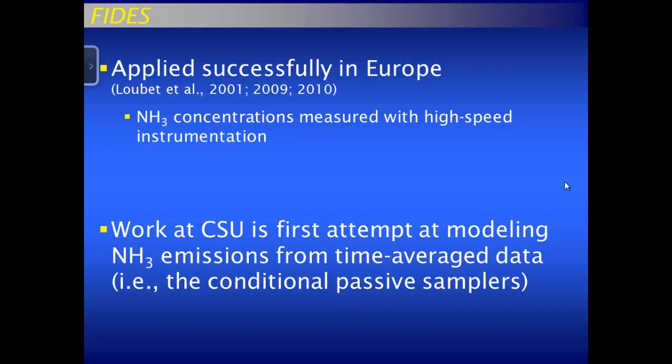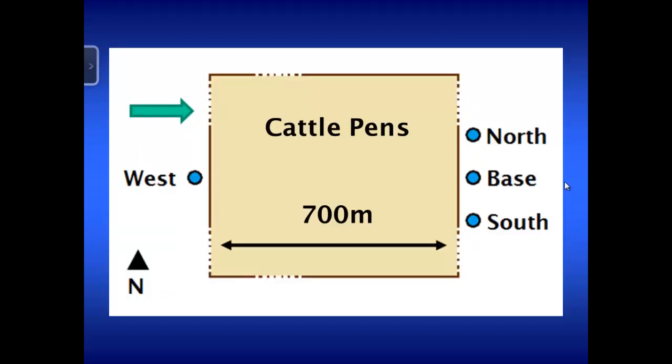FIDES has been applied very successfully in Europe for the past ten or so years, and it was created in France. The difference is that in Europe they were doing ammonia measurements that were a time series, whereas we have a two-week period represented by a single concentration for each location. This is really the first time that an inverse model has been used with time-averaged concentration data — we went into it wanting to see what was going to happen and whether we'd even get close to a good estimate.